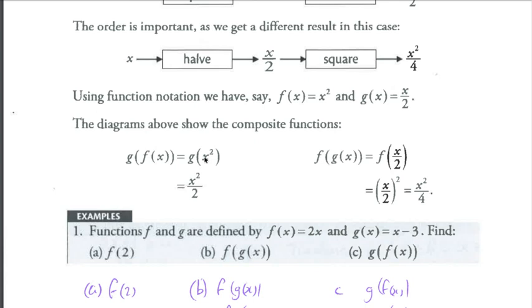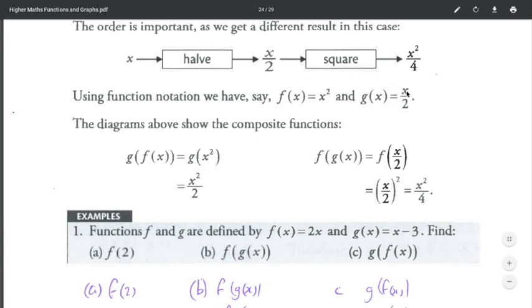I'll say that again. Whatever's in that bracket is substituted in for X here. So G of X squared, I'm replacing any X with an X squared. So X squared divided by 2.